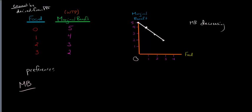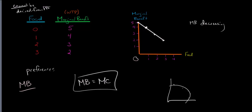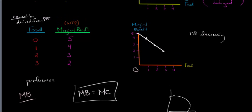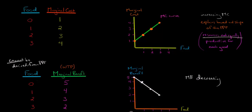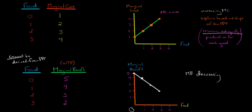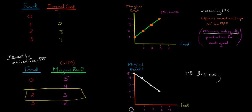This is where the marginal benefit curve becomes important. It tells us, when we look at the PPF and ask which point we want, we can find where marginal benefit equals marginal cost — that's our target. When we're at two units of food, the marginal cost is three, and the marginal benefit is also three. So at two food, marginal cost equals marginal benefit. If we went to three food, the marginal benefit would be two and the marginal cost would be four, so marginal cost would actually be higher — meaning we've gone too far.